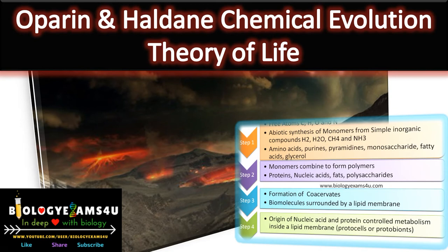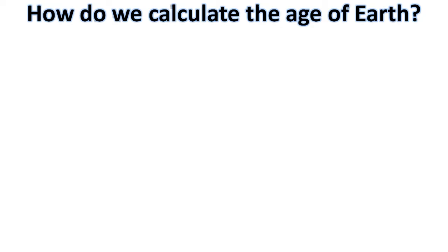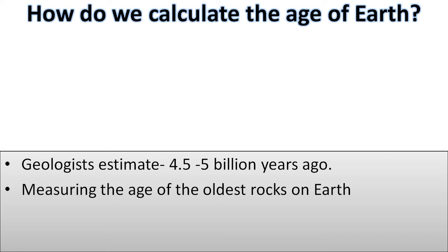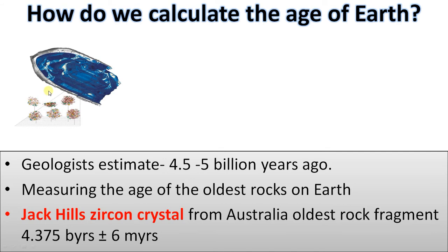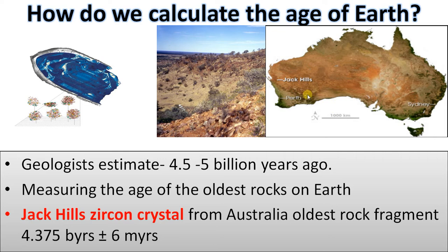How do we calculate the age of Earth? According to geologists, Earth is around 4.5 billion years old. We get this number by measuring the age of the oldest rock on Earth by carbon dating. We have the Jack Hills zircon crystal from Australia, which is the oldest rock fragment known.